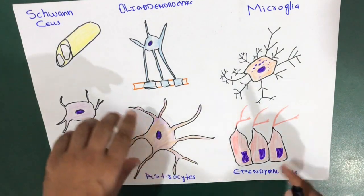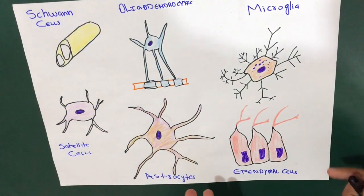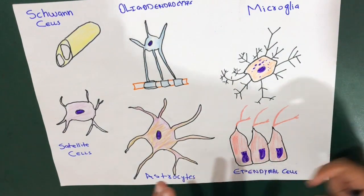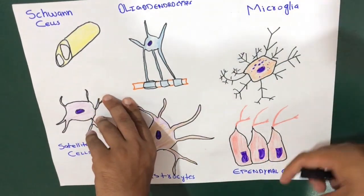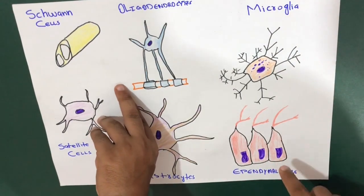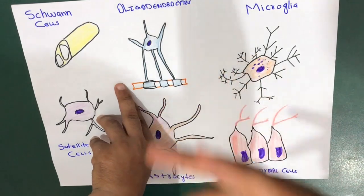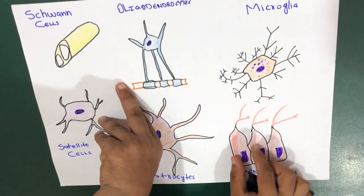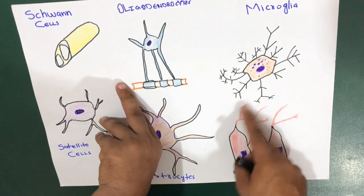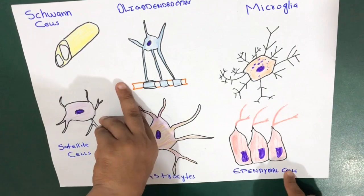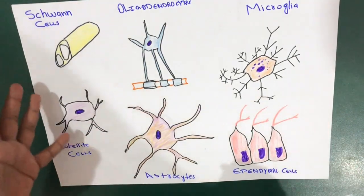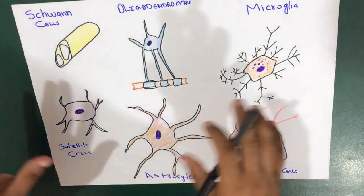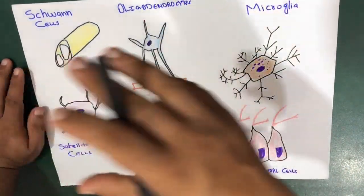Finally, the ependymal cells — part of the central nervous system neuroglial group. Their main function is to line the ventricles of the brain and the central canal of the spinal cord, and they are involved in the production of cerebrospinal fluid. Their structure allows them to release this fluid, so the main function of ependymal cells is the production and release of cerebrospinal fluid.